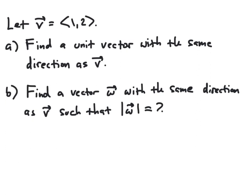In this example, we're asked to let v be the vector with component form 1, 2. We want to find a unit vector with the same direction as v, and find a vector with the same direction as v but has a magnitude of 7.